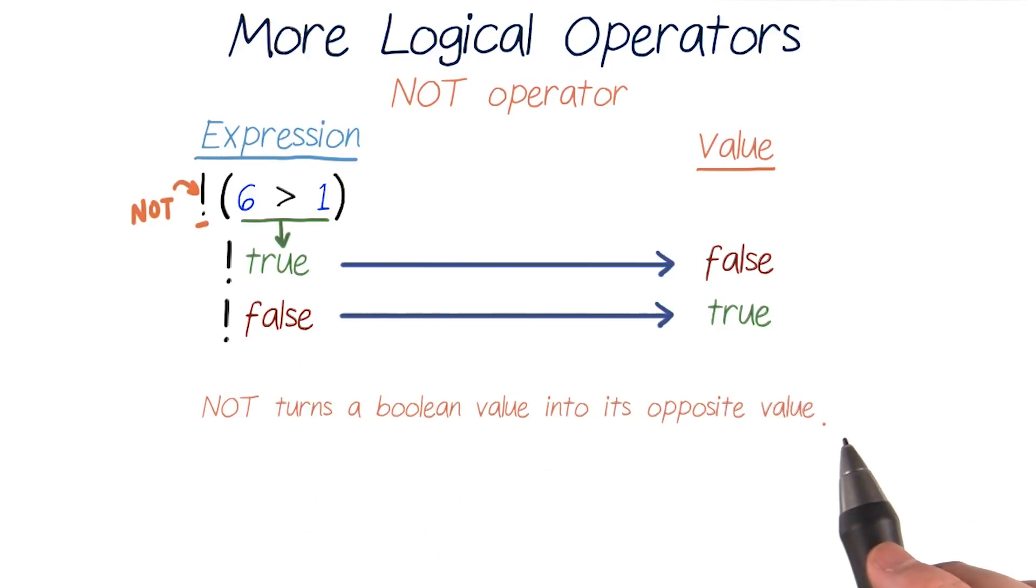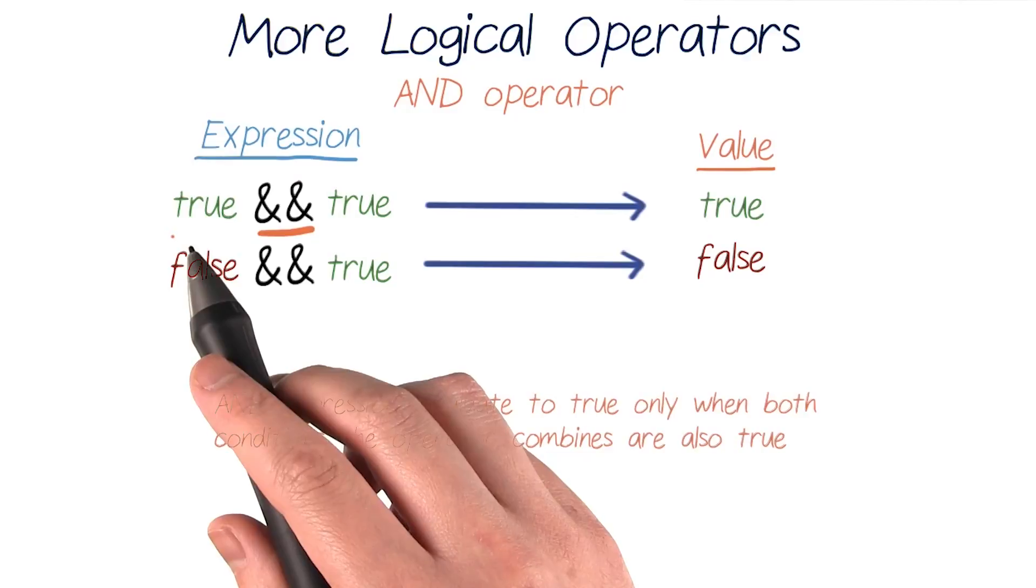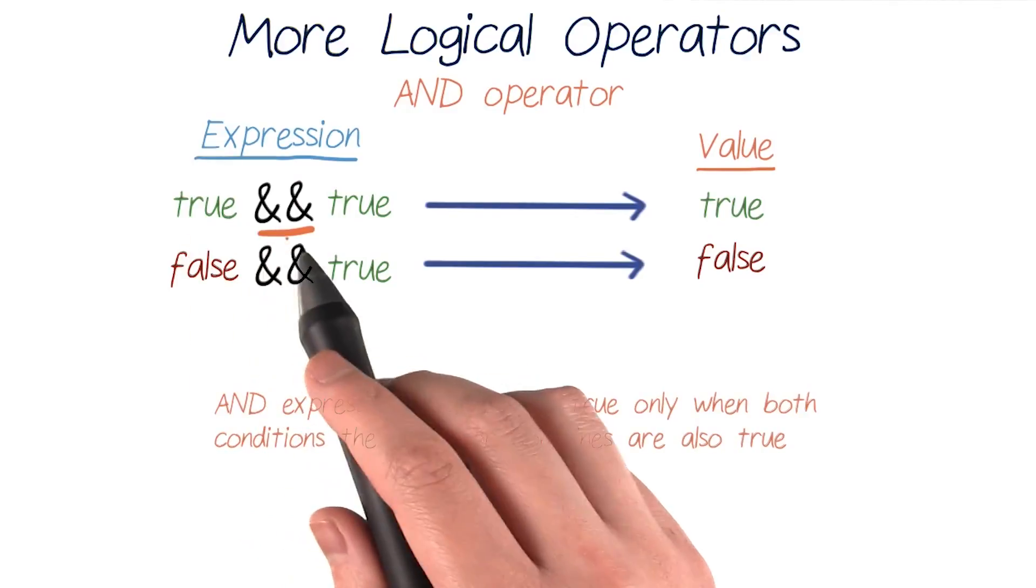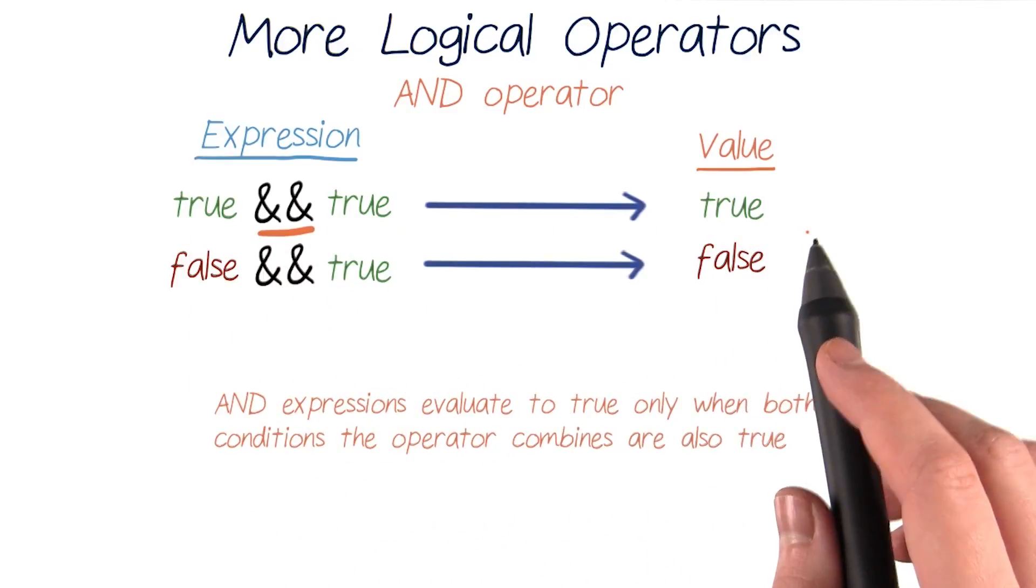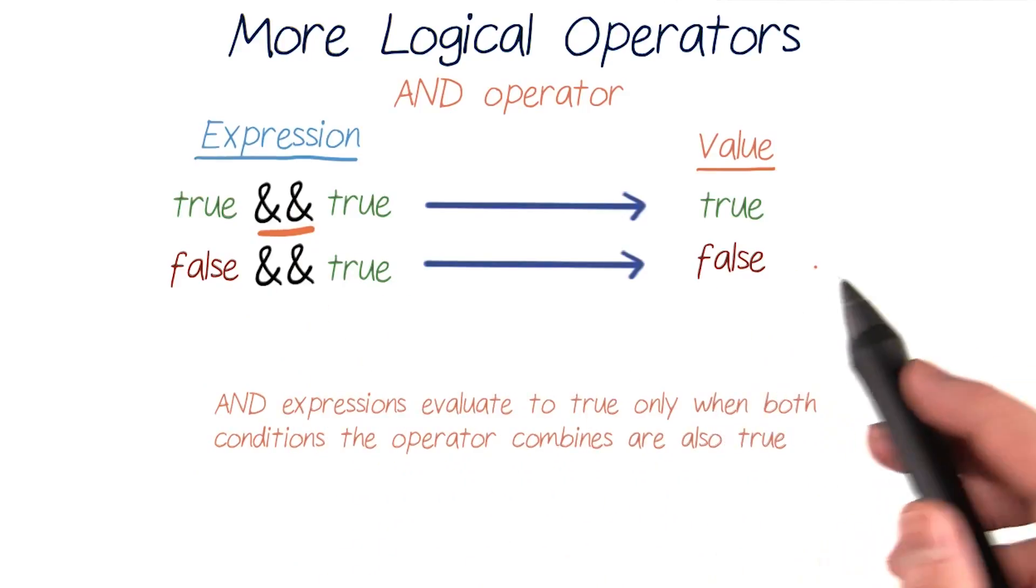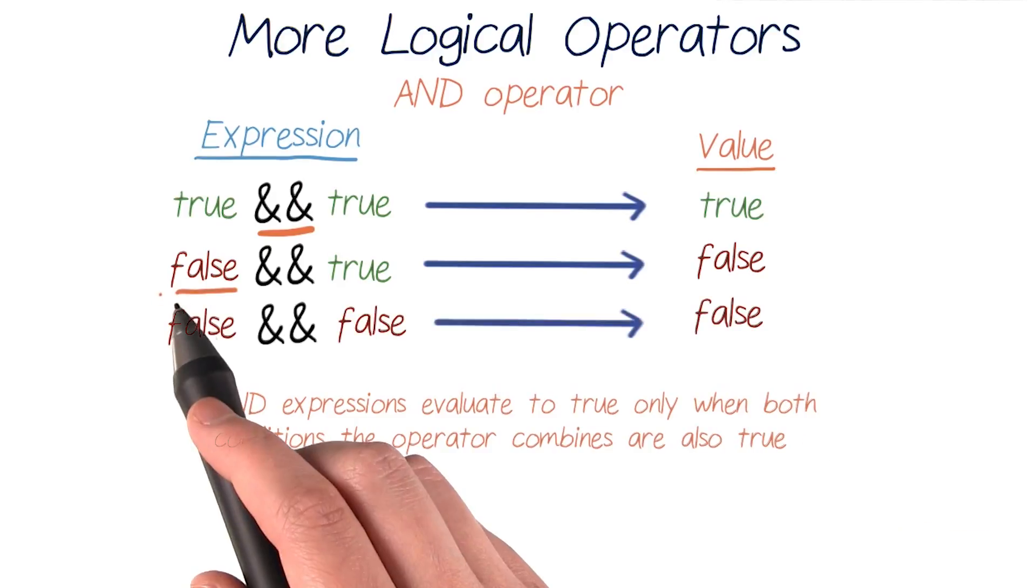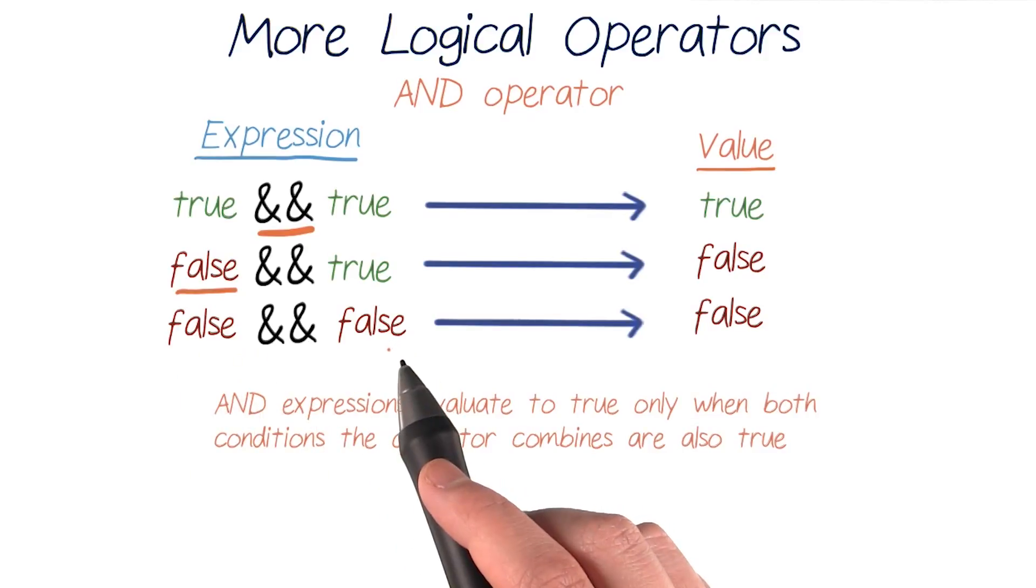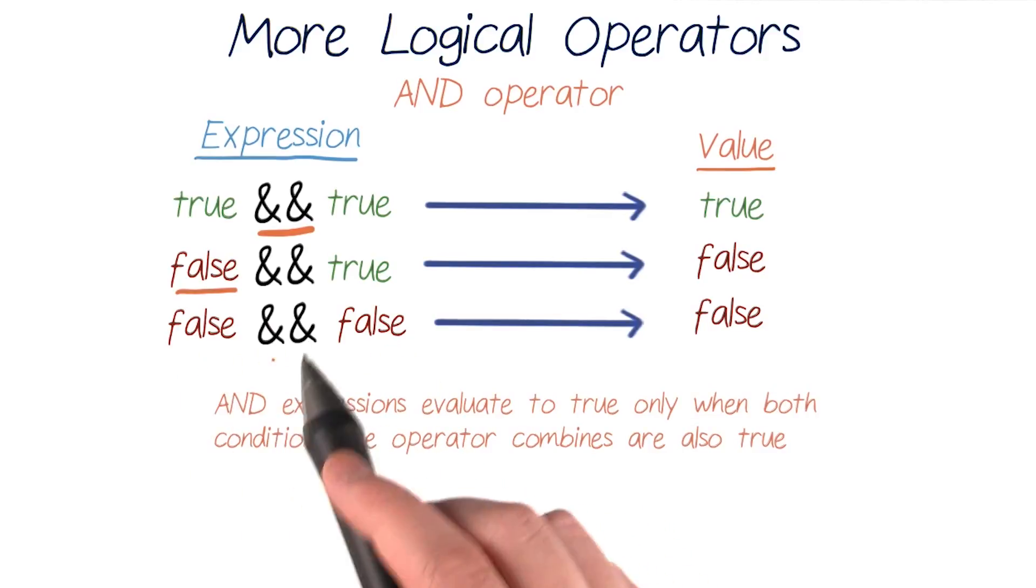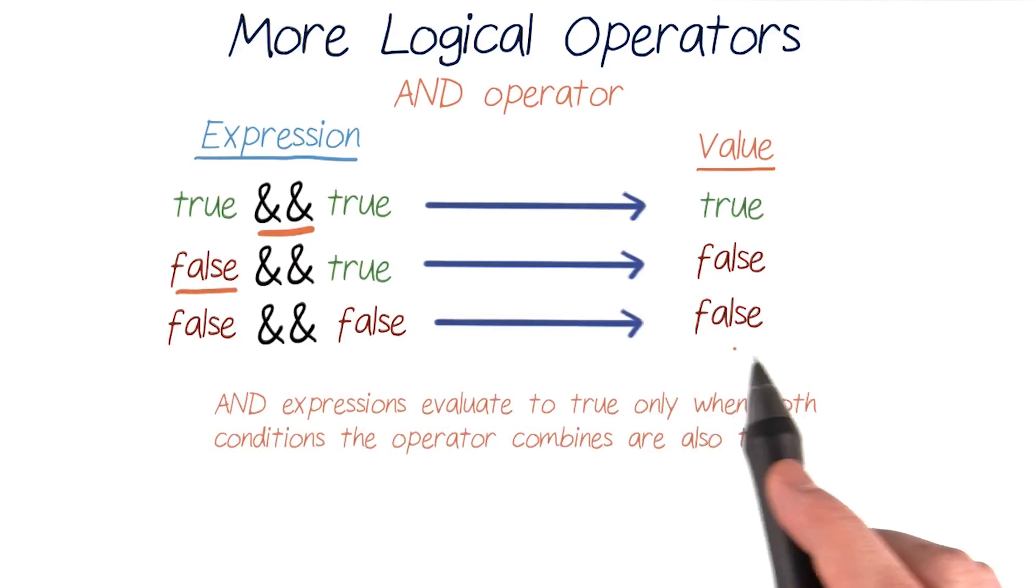Next, let's look at the and operator. For the and operator, true and true will evaluate to true, but false and true will evaluate to false. This is because the and operator needs both of its combined conditions to be true for the whole expression to evaluate to true. So if just one or both of its combined conditions are false, then the whole and combination will also be false.